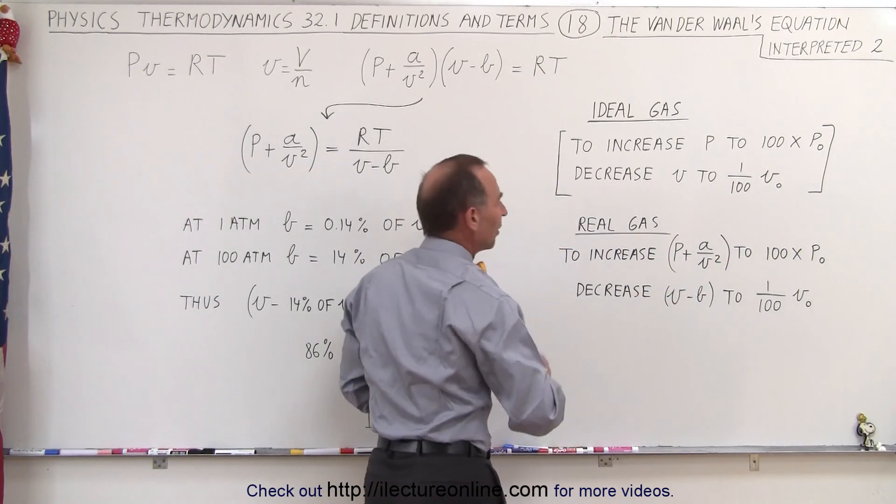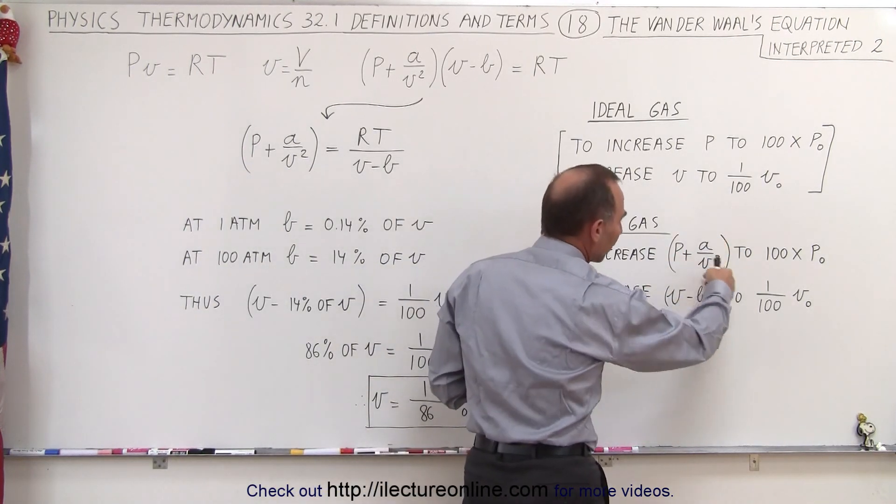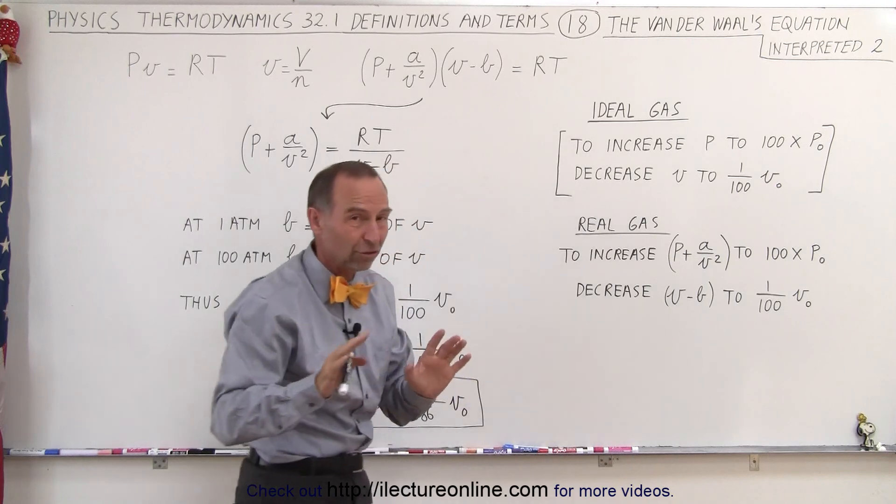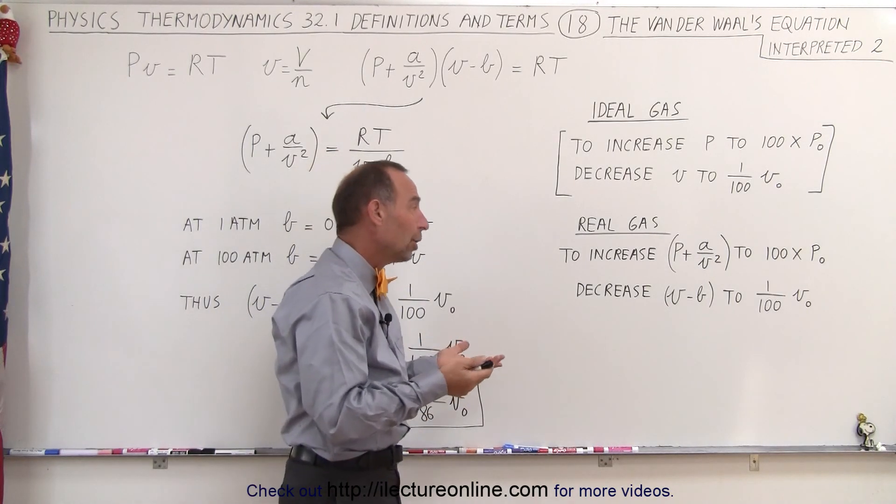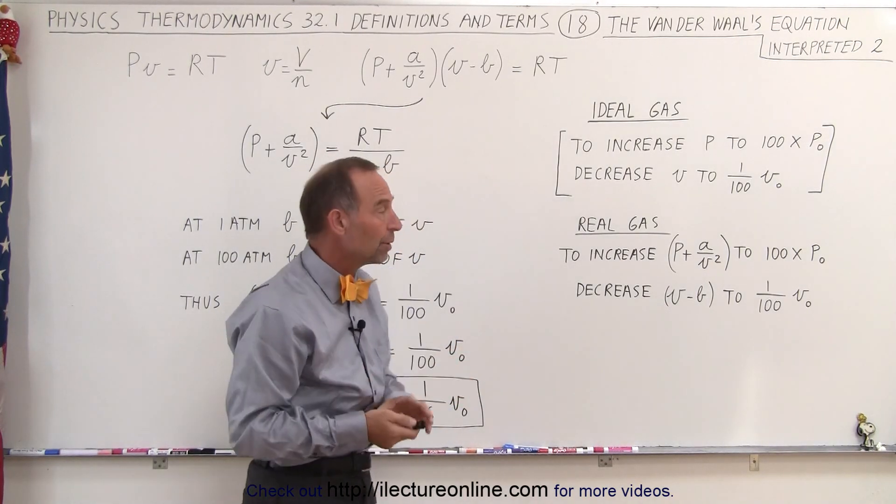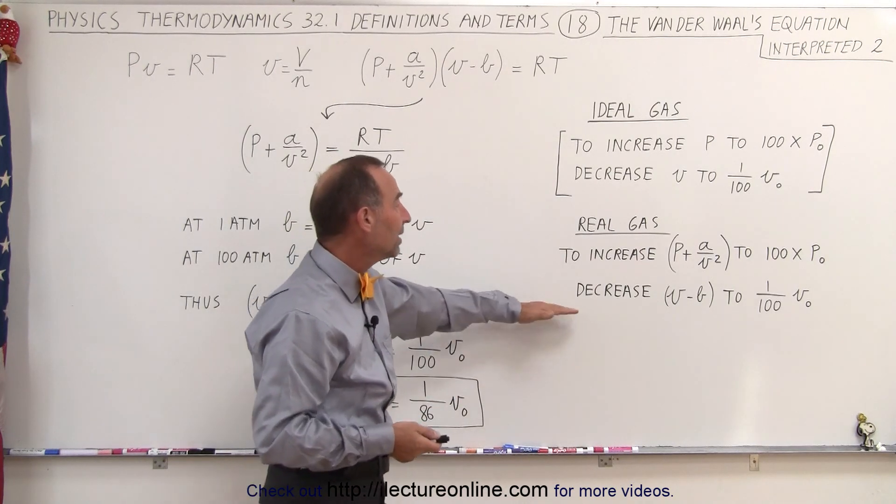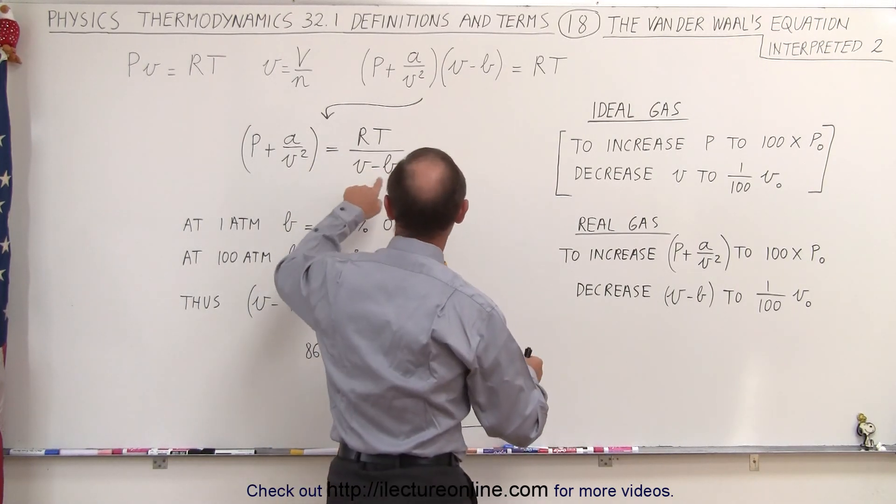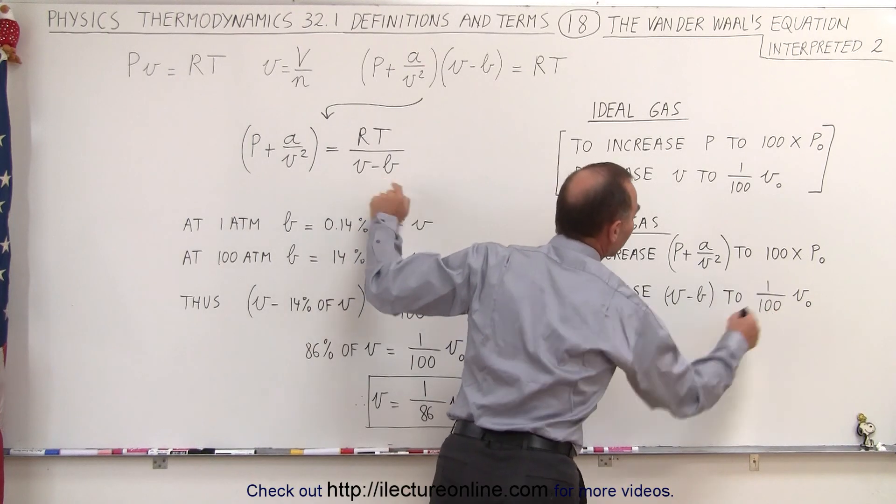...again at 1 atmosphere, a over v squared can be ignored because it's just a very small percentage of the total pressure. With oxygen it's only about 0.3%. Then we need to decrease not just v but v minus b to 1/100 v initial.